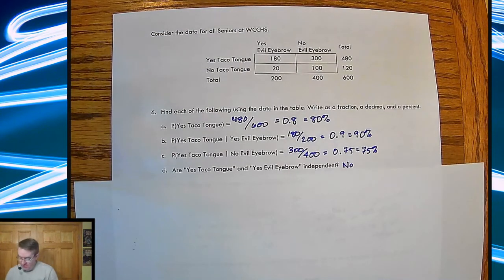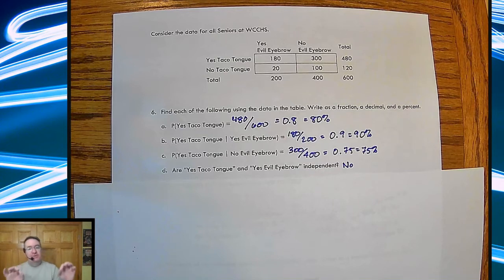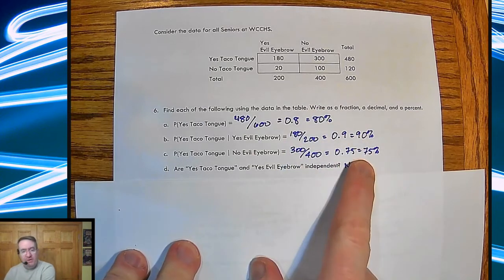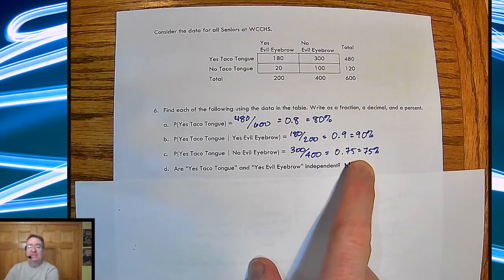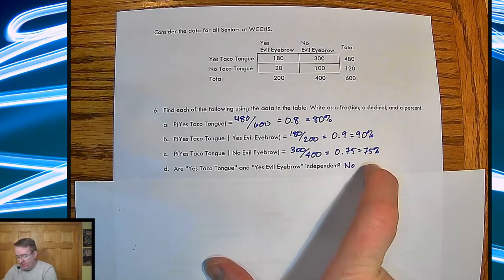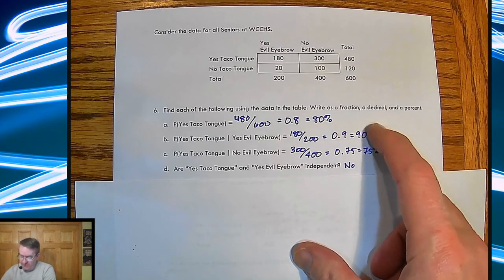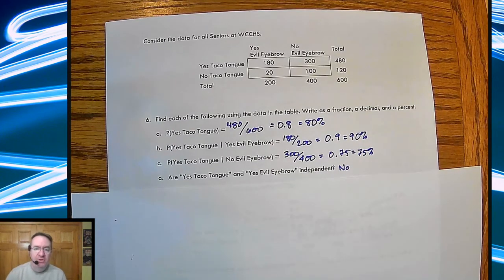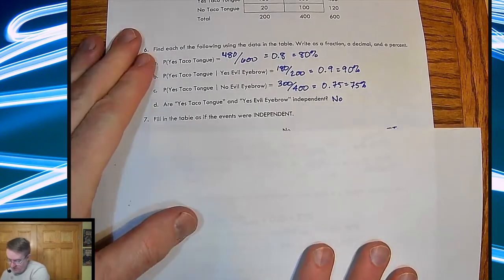And here we go. So you would say, no, they're not independent. Why? Because the percentages aren't the same. Another reminder, to disprove something, you only need one case. To prove something that's independent, you would have to show all three of these. To show that something's not independent, all you need to do is show that, usually go these two don't work or don't match up.